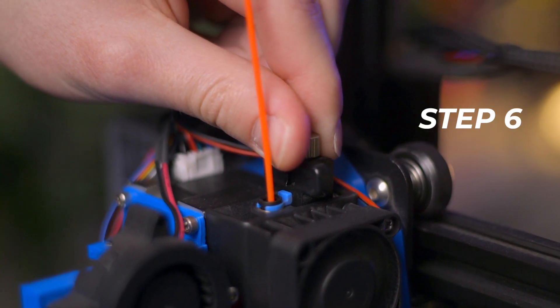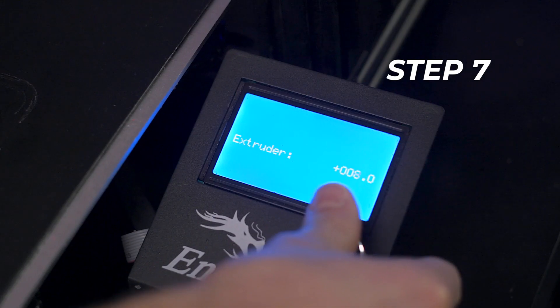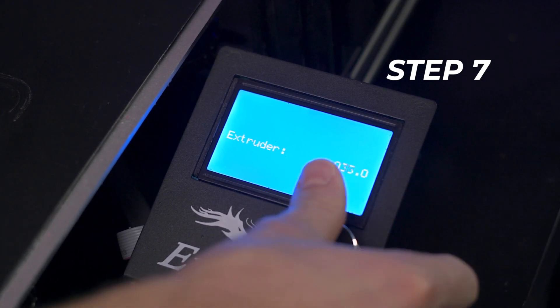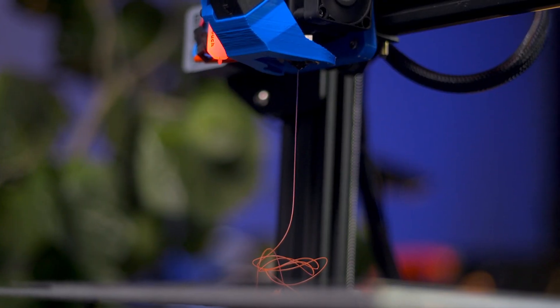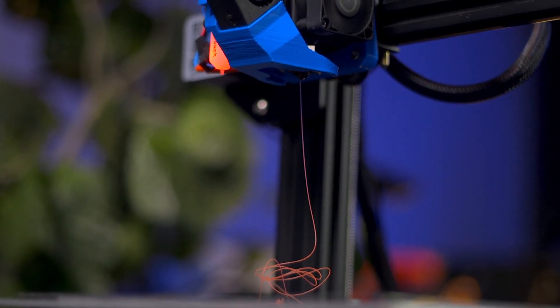Step 6: Once the filament has reached the nozzle, readjust the tension. Step 7: Through the LCD, extrude 100mm of filament to ensure that the previous material is adequately purged or to transition completely from the previous filament to the new one.